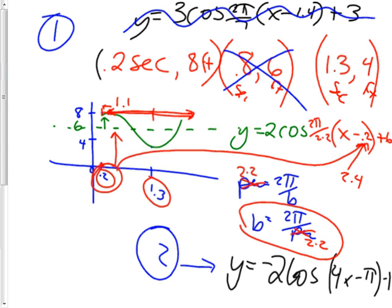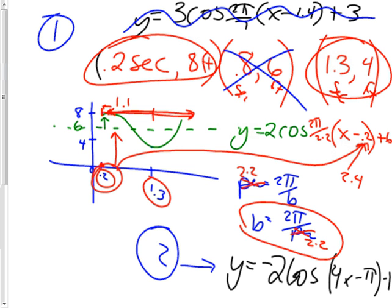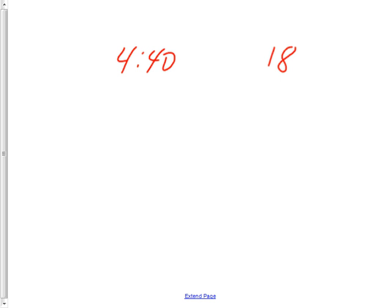What if we change that to a real-world problem about the tide — and I had you look up some tides, the low tide and the high tide? It's basically giving you these points, except you're going to find them on a chart in the real world. It'd give you the time it hit the low tide and the time it hit the high tide. For example, at 4:40 AM it hit a high tide of 18 feet above sea level — that's how they always do tides, above or below sea level. And then 6 hours later at 10:40, it had a low tide of negative 3 — that means 3 feet below sea level.